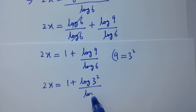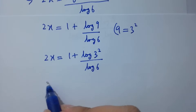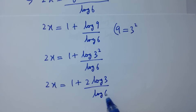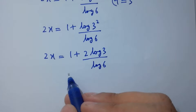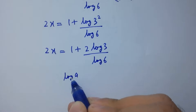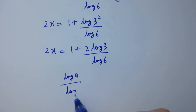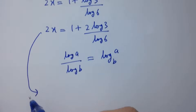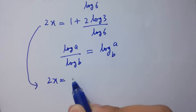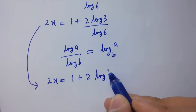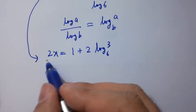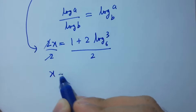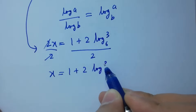Log 9 equals log 3 squared, so we have 2x equal to 1 plus 2 log 3 over log 6. Using log a over log b equals log a to the base b, we get 2x equal to 1 plus 2 log 3 to the base 6. Divide by 2 on both sides — 2 and 2 cancel — giving x equal to 1 plus 2 log 3 to the base 6, all over 2.